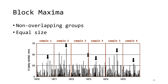When we use non-overlapping groups of equal size to create our sample maxima, the procedure is called block maxima. In hydrology, we typically use the water year as our equal size non-overlapping groups. In the time series shown here, you can see that there are six water years corresponding to the six samples we are taking. The arrow labels the block maximum, which we also call the annual maximum. When the blocks are a year, we refer to the collection of maxima as an annual maximum series.